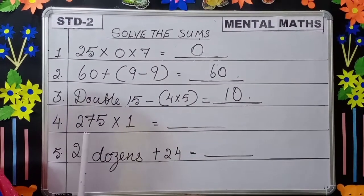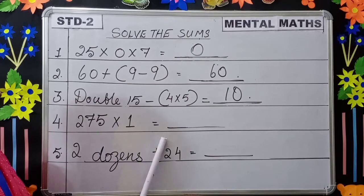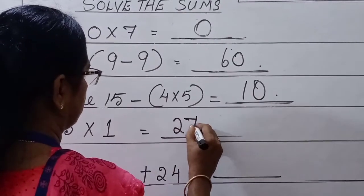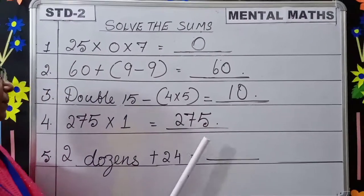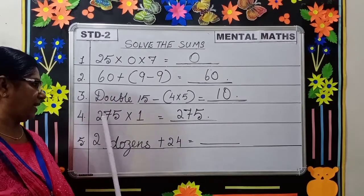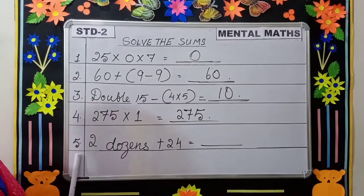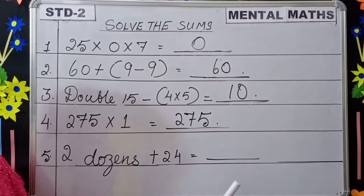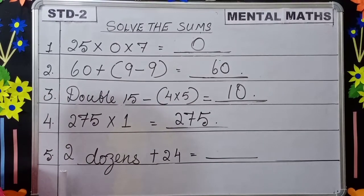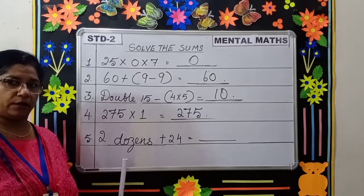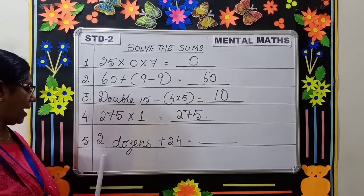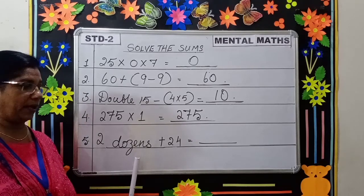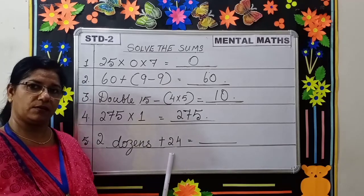Fourth question: 275 into 1 is equal to 275, because any number multiplied by 1 is equal to the same number. Moving to the fifth question: 2 dozens plus 24 is equal to dash. What is 1 dozen, children? The unit of 1 dozen is 12. Here we have 2 dozens, so 12 plus 12 is equal to 24, plus another 24 — the answer will be 48.